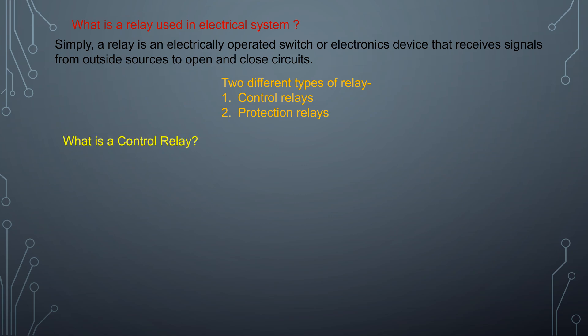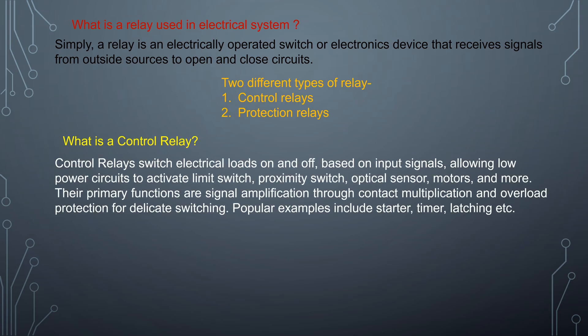What is a control relay? Control relays switch electrical loads off and on based on input signals, allowing low-power circuits to activate limit switches, proximity switches, optical sensors, motors, and more. Their primary functions are signal amplification through contact multiplication and overload protection for delicate switching. Popular examples include starter, timer, latching relays, etc.